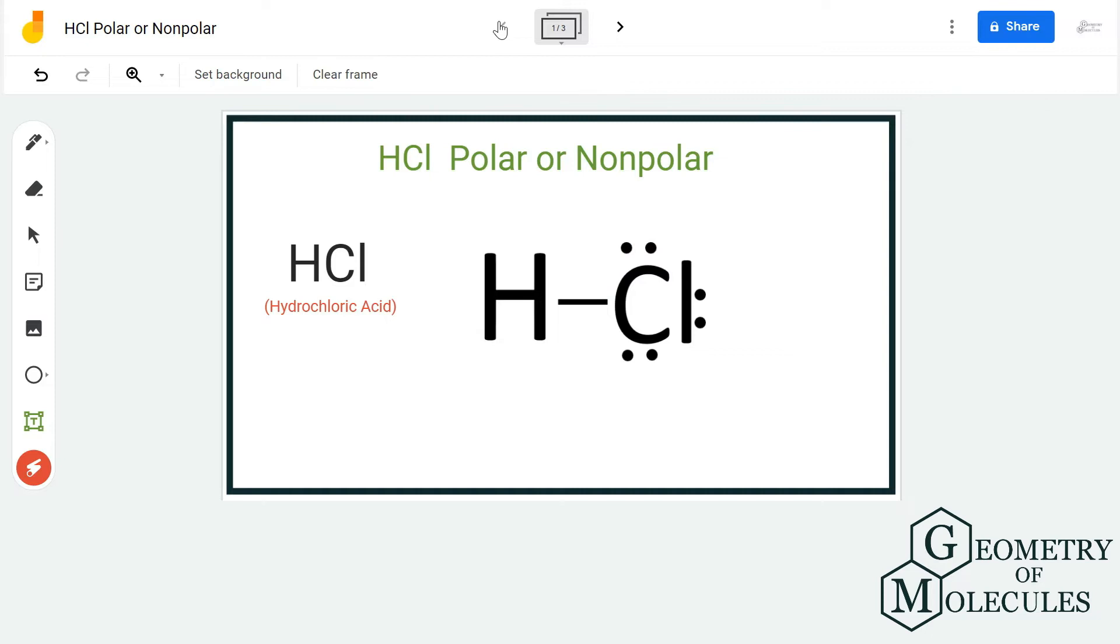To understand the polarity aspect, we have to look at the molecule and its shape. When you look at it in three dimensions, you can see that there is an unequal sharing of the valence electrons.